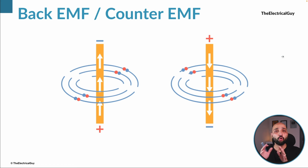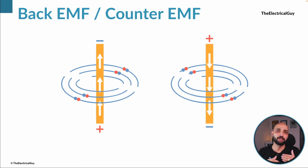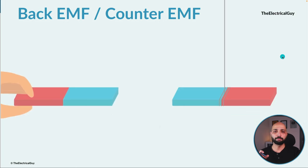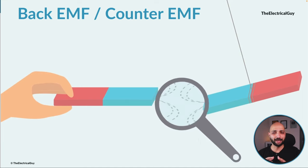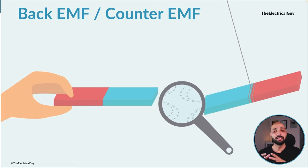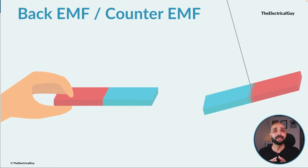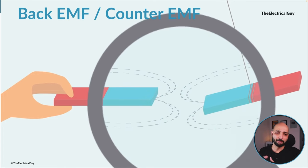When current passes through a conductor it generates its own magnetic field, as you can see on screen. This magnetic field interacts with the magnetic field created by a magnet or electromagnet, and that's why a force acts on the conductor. It's similar to pulling two magnets with the same polarities together — they repel each other. The two magnetic fields interact and create a force that diverts the conductor.